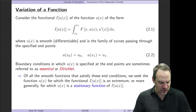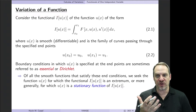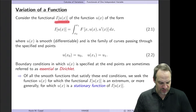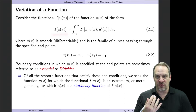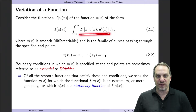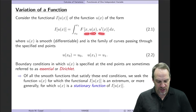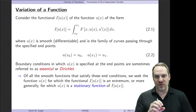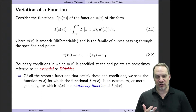Let's think about the variation of a function. We have a generic functional I of u of x, which is a definite integral in one independent variable x. The integrand, capital F, is a function of x, u, and u prime — the independent variable, the dependent variable, and its first derivative. We'll extend it to more general cases later on, but this form encompasses a wide variety of scenarios — including all three of the motivational examples from chapter one.